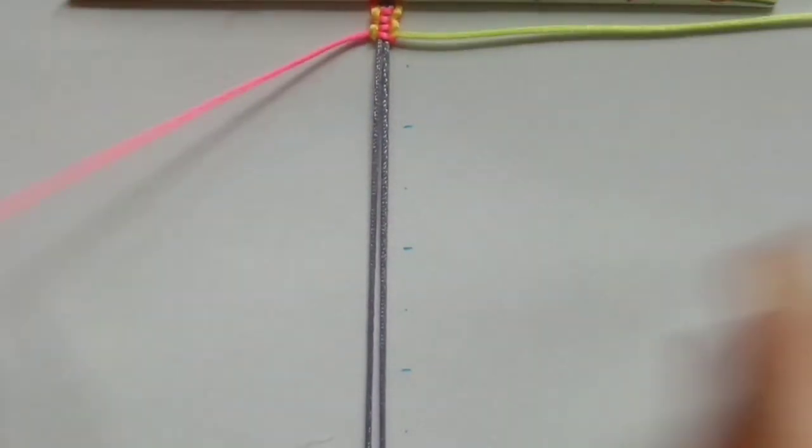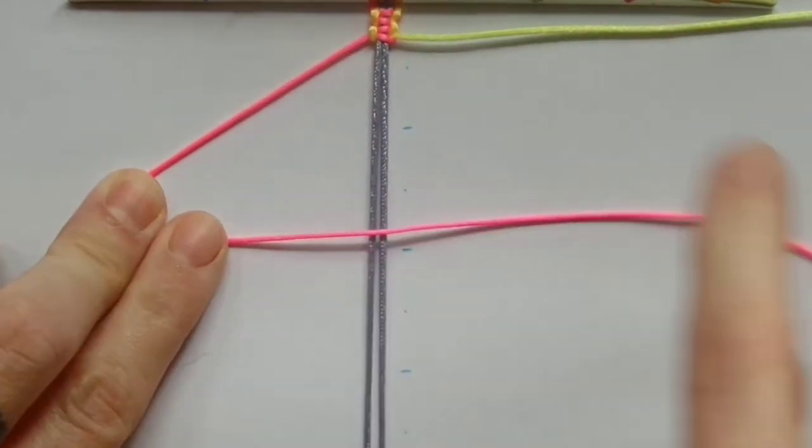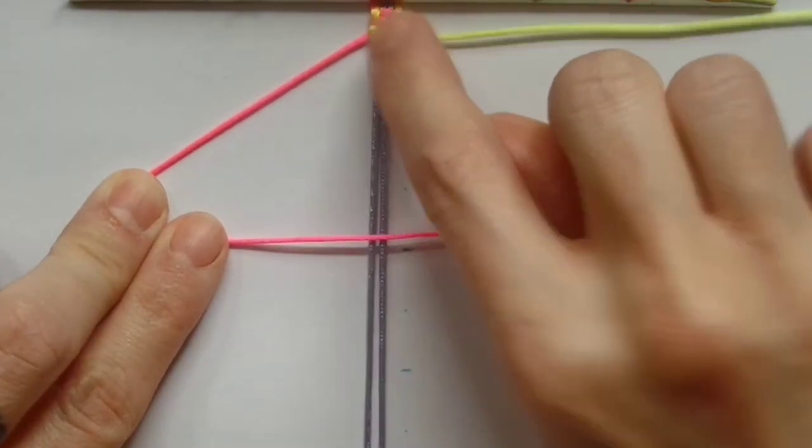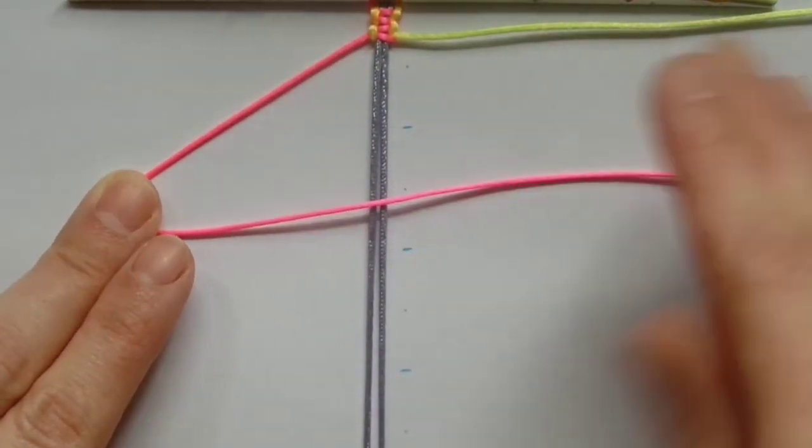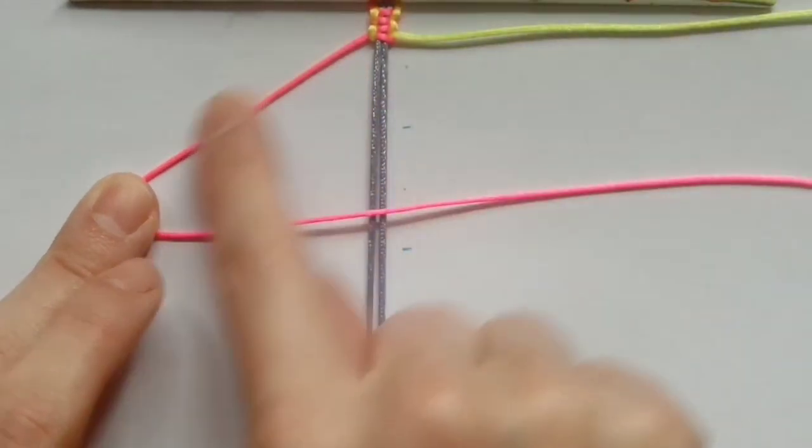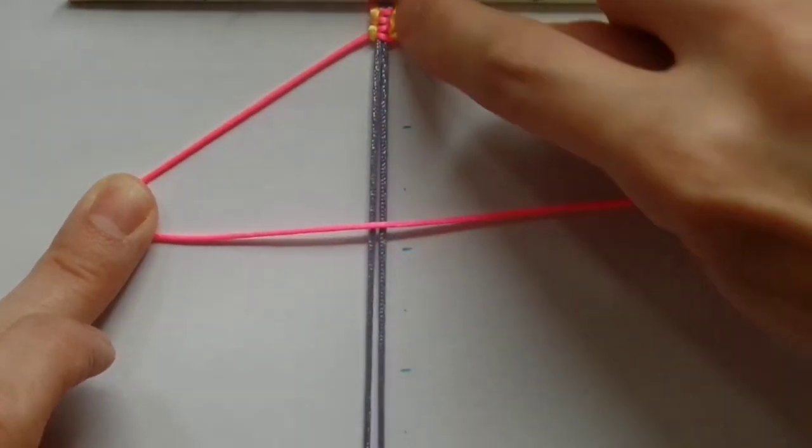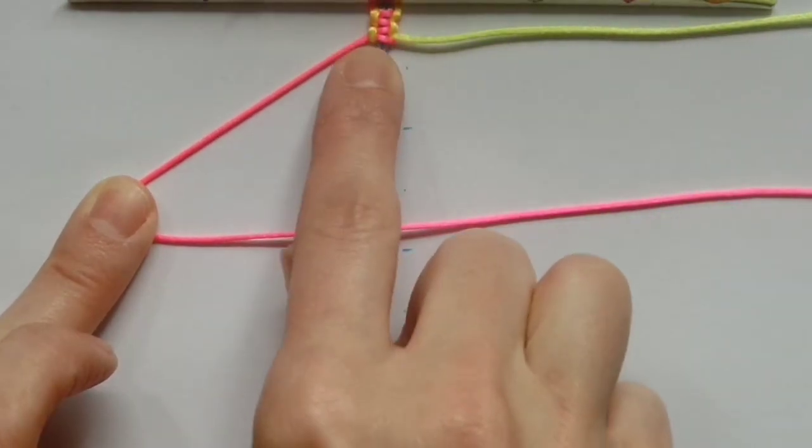The thing you want to remember when you are doing your square knot is whichever cord you work over the top of the holding cords is the one that is going to show up in the center. This is particularly relevant when you are doing two different colors. Obviously it doesn't really matter when you are doing the same color cords, but if you are doing different colors, you will see that this one that I have got pink on the left is the one that runs down the center and the yellow is at either side.